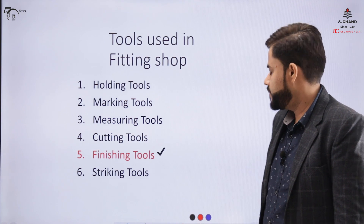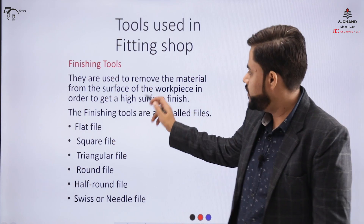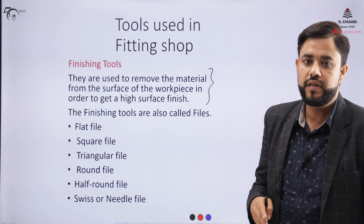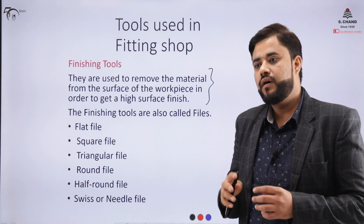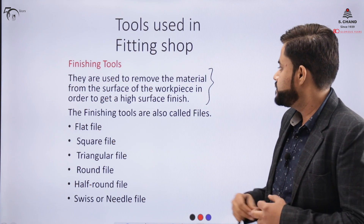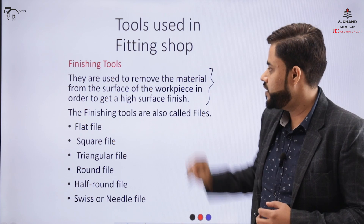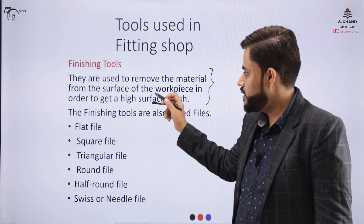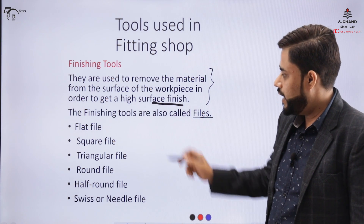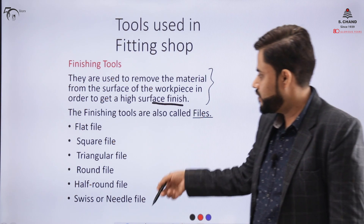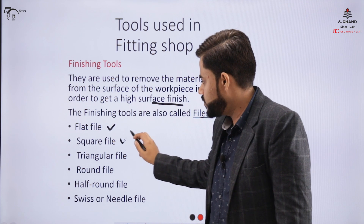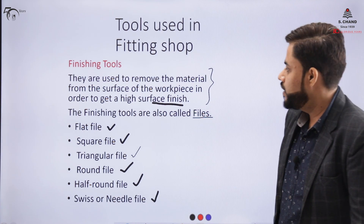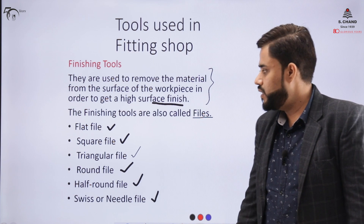The fifth category is the finishing tool. A finishing tool is used to remove material from the surface of the workpiece in order to achieve a high surface finish. Once the material has been cut, we process it with finishing tools to obtain the required surface finish. This surface finish is achieved with the help of a file. The general categories of files are: flat file, square file, triangular file, round file, half-round file, and needle file.